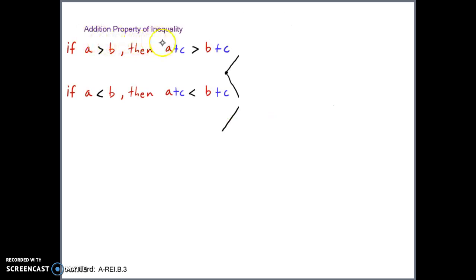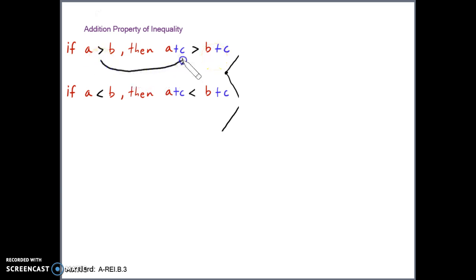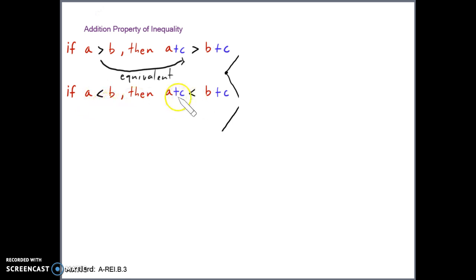The addition property of inequality is the same as the addition property of equality — the only difference is the sign. If A is greater than B, then we can add C to both sides and the result is an equivalent inequality. We are not changing the solution set. The same is true if the sign is less than — we can add anything we want as long as we add it to both sides.